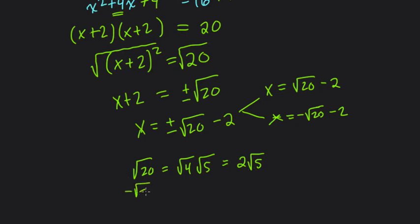So the negative square root of 20, you could say, is the negative product of the square root of 4 times the square root of 5, which equals -2 times the square root of 5. So our two answers become 2√5 - 2 and -2√5 - 2.